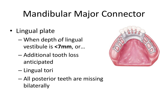We also have the lingual plate, which is used when the depth of the lingual vestibule is less than seven millimeters. There are a couple of other indications: additional tooth loss is anticipated, there are lingual tori in the way of the bar, or all posterior teeth are missing bilaterally. You can notice in this image they depict canine to canine with all posterior teeth missing. You get a little better support with this plate, though it could be less comfortable for the patient.